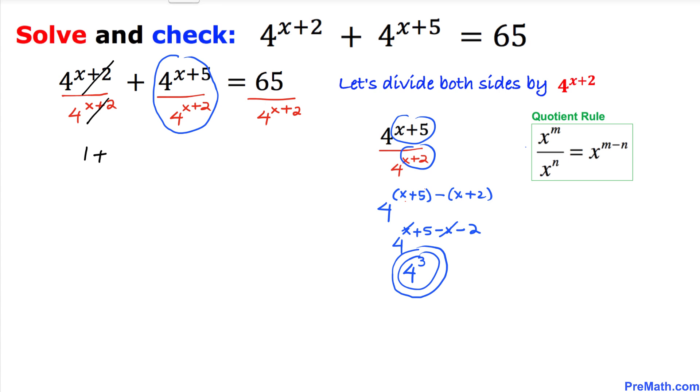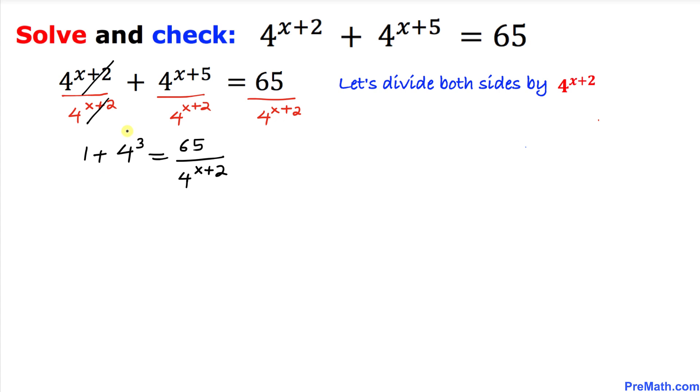Therefore I can replace this fraction by this simplified form, so I can write 1 + 4^3 = 65/4^(x+2). Here's our next step: we know 4^3 is 64, so we can write 1 + 64 = 65/4^(x+2).